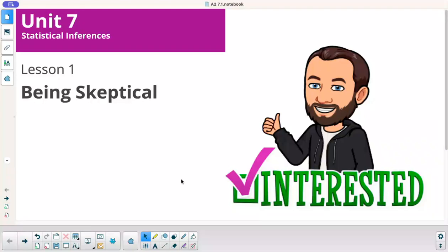Luster to Math, Algebra 2, Unit 7, Lesson 1 is called Being Skeptical.